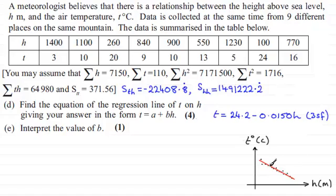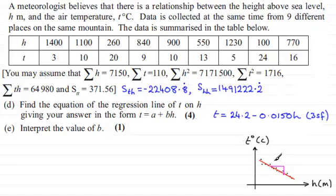When doing questions like this, think about what happens when you go one unit across in the direction of h increasing, and then what happens to your value. In this particular example it goes down — so if you go across one meter, this decreases by 0.015.